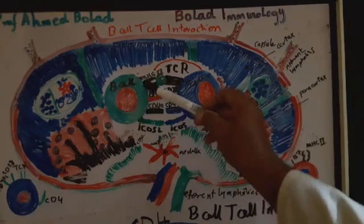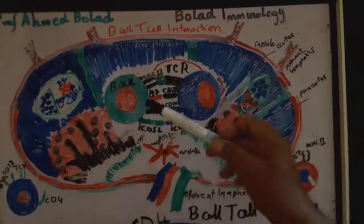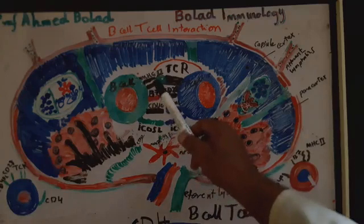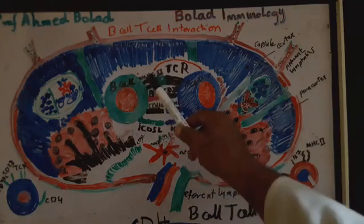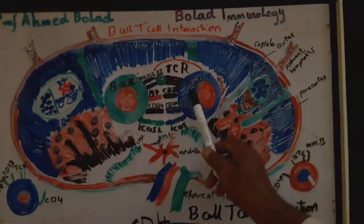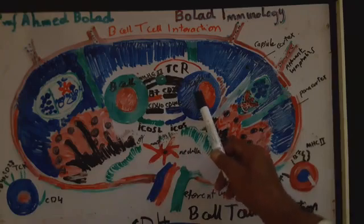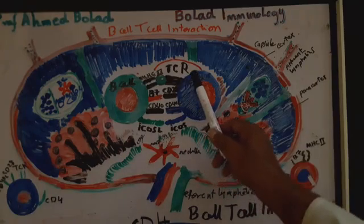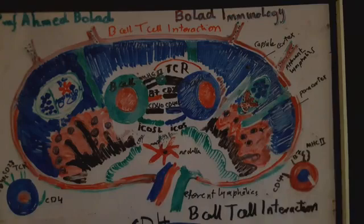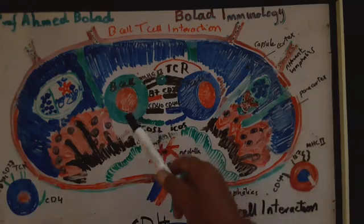B-cells are antigen-presenting cells, so they have the capacity to process the antigen and present it in association with MHC class II to CD4 cells. CD4, through its T-cell receptor, interacts with the antigen, and this initiates the first signal for activation of a B-cell.